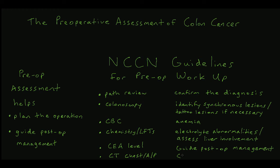A CT of the chest, abdomen, and pelvis is recommended to characterize the extent of disease. The liver and lungs are common sites of metastasis for colon cancer, and imaging can help identify lesions in these organs to help properly stage the cancer. Imaging of the abdomen can also help identify local advancement of the disease into adjacent structures, which should be resected en bloc along with the primary tumor. It is helpful to know about these findings prior to the operation if at all possible.